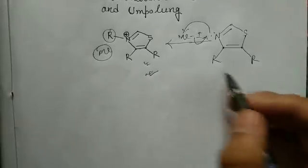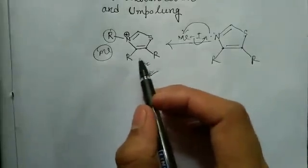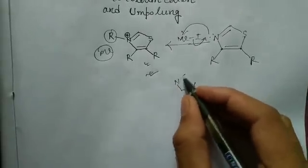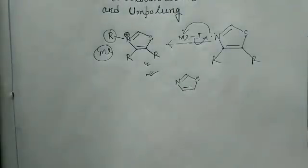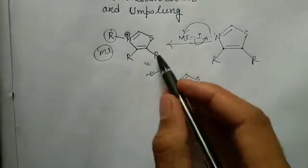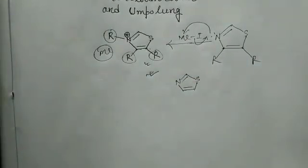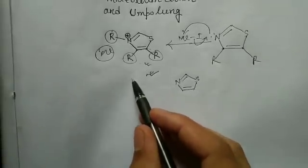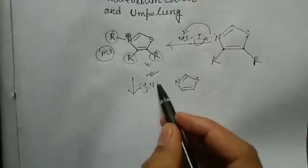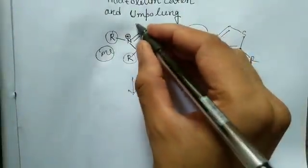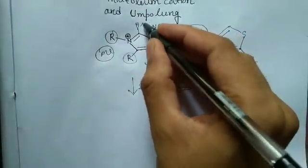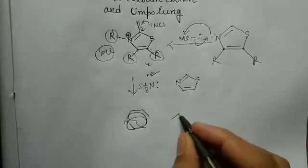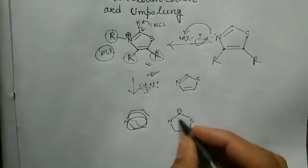Before discussing the reactions, let me first tell you about some features of this reagent. This is the normal thiazole ring — if you don't have any substituent, this is the normal thiazole ring. But the reagent used for synthesis has two R groups at these two positions. In the active form of the thiazolium cation, we generally use triethylamine along with the thiazolium cation, which takes a proton from here to produce this zwitterionic species.